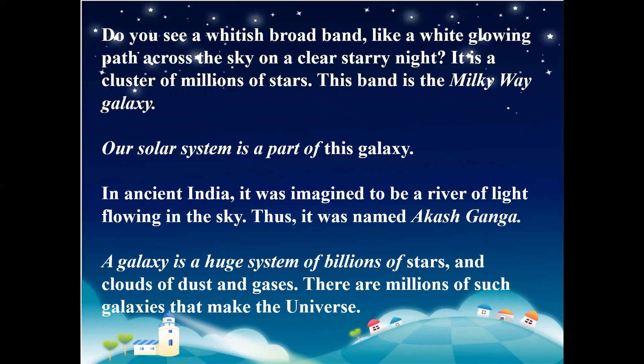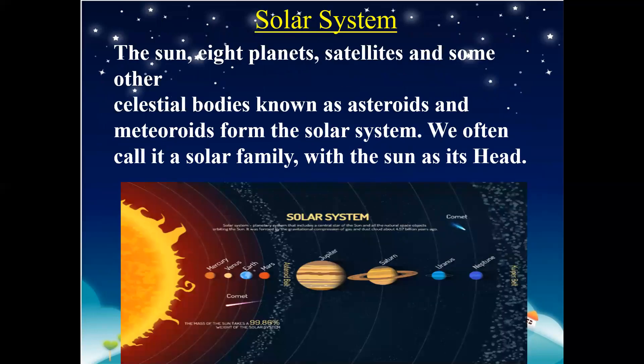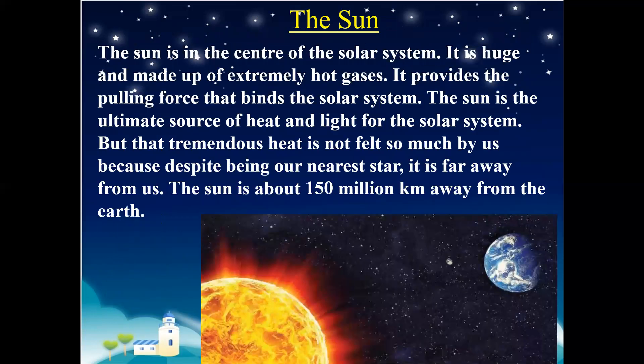In ancient India, the Milky Way was imagined to be a river of light flowing in the sky, and thus it was named the Akash Ganga. A galaxy is a huge system of billions of stars and clouds of dust and gases. There are millions of such galaxies that make up the universe. The sun, the eight planets and satellites, and some other celestial bodies known as asteroids and meteoroids form the solar system. We often call it the solar family, with the sun as its head. The sun is at the center of the solar system and is made up of extremely hot gases.